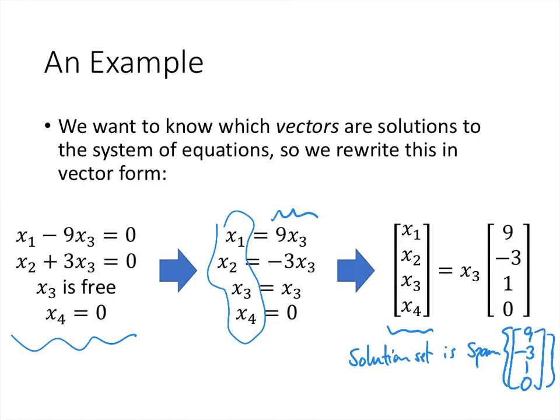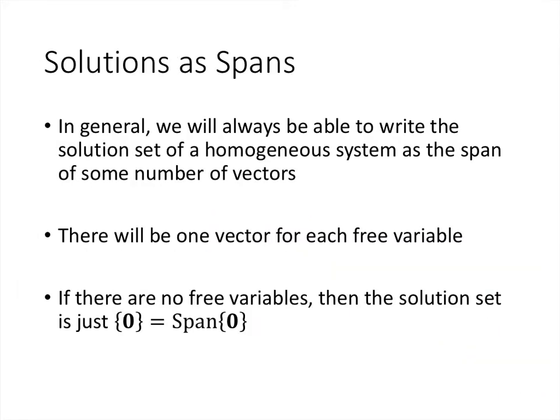If we had had more free variables, we would have more vectors to write down for our span. So in general, we're always going to be able to write the solution set of a homogeneous system as the span of some number of vectors. There's going to be one vector for each free variable. And if there happen to be no free variables, then that zero vector, the thing that's always going to be a solution, will turn out to be the only solution. And so the zero vector all by itself, only that one vector, which can be thought of as the span of just the zero vector.